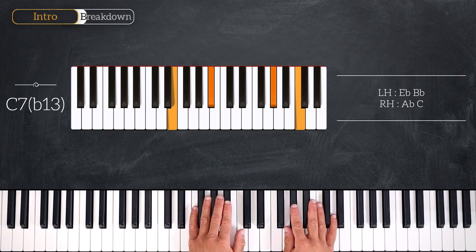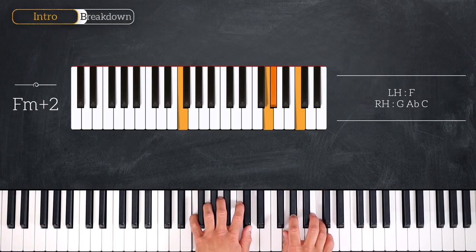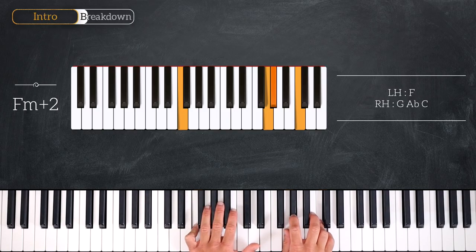Next we'll play this F minor at 2. So we play the bass F on the left and G, Ab, C on the right.